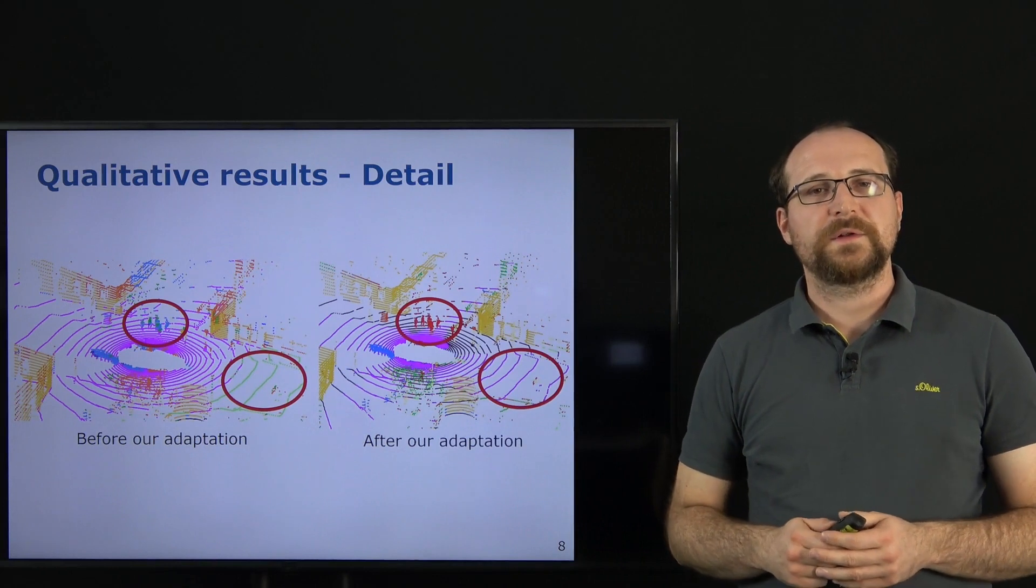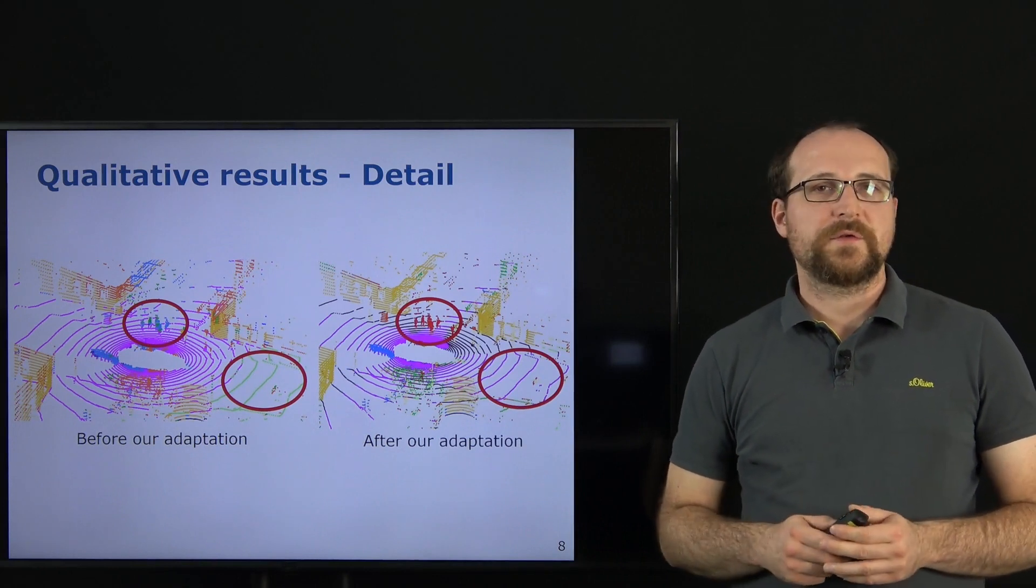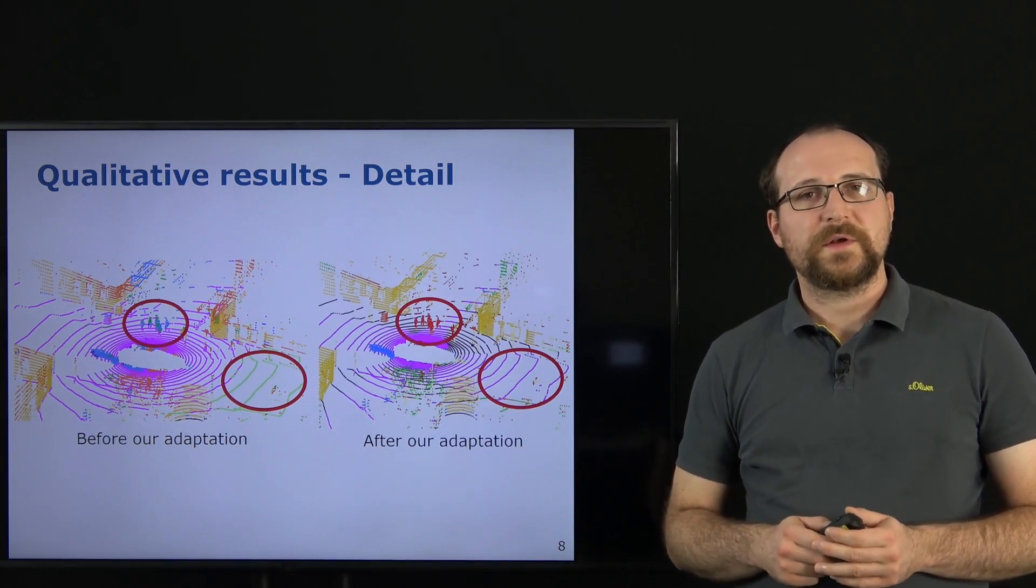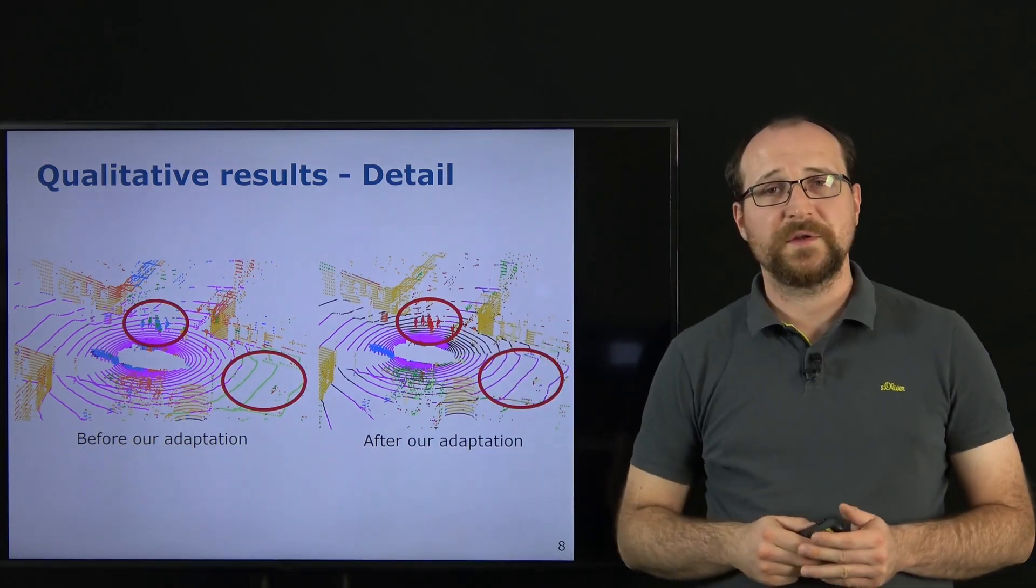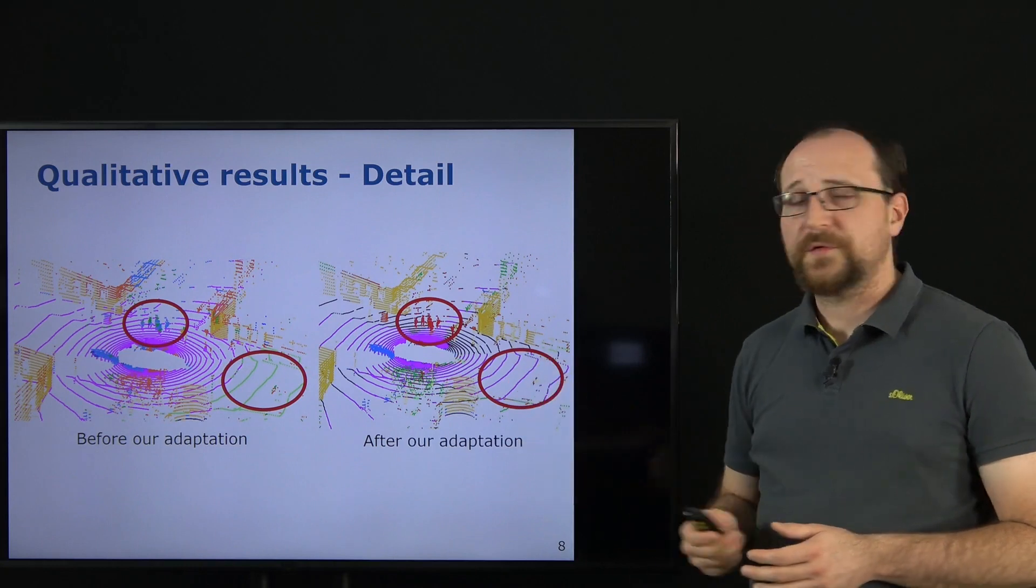Coming back to our initial example, here we can see that our approach leads to more coherent results and also now correctly classifies the pedestrians as pedestrians and also the road surface correctly.